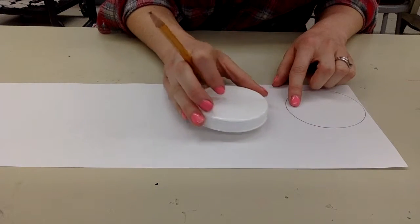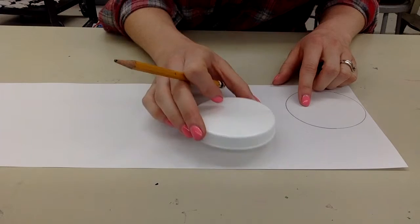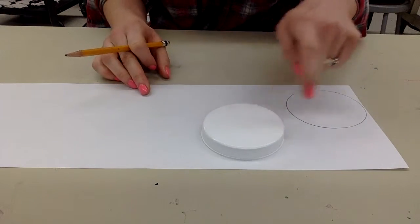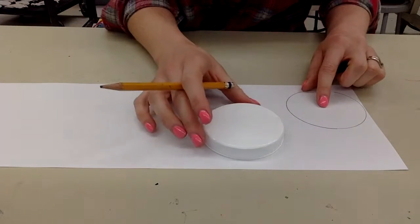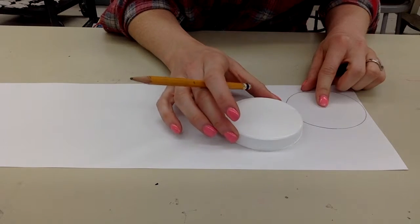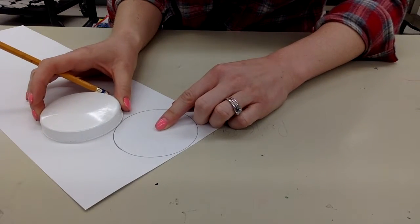You're going to take it, and you are going to connect the circle. So you don't want to trace right over here. This is going to be the body, so it needs to connect. So you're going to take it, and you're going to make sure that the two are touching.